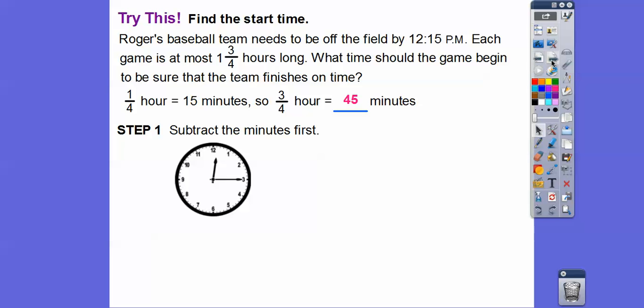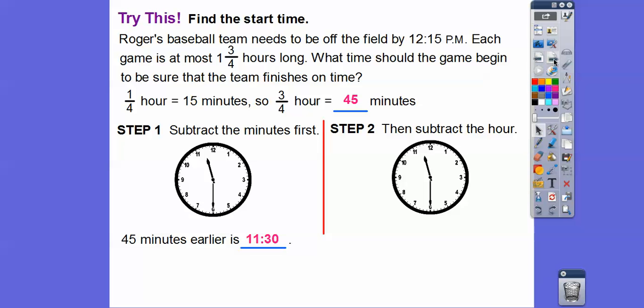We can subtract the minutes first. So we're going to subtract 45 minutes. This minute hand is going to go backwards, and it's going to take us to 11:30. So 45 minutes earlier is at 11:30. There's that 3-fourths of an hour. Now we just subtract off the hour. So if we subtract the hour off of 11:30, it's going to take us to 10:30. So 1 hour and 45 minutes earlier would be at 10:30 in the morning, 10:30 AM.